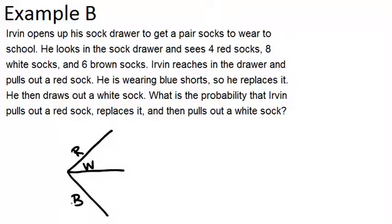Now we want to think about the probabilities of each of these. He has four red, eight white, and six brown. So in total he has 18 socks. Four of which are red, so the probability of red is four out of 18. Eight are white, so the probability of white is eight out of 18. And six are brown, so the probability of brown is six out of 18.